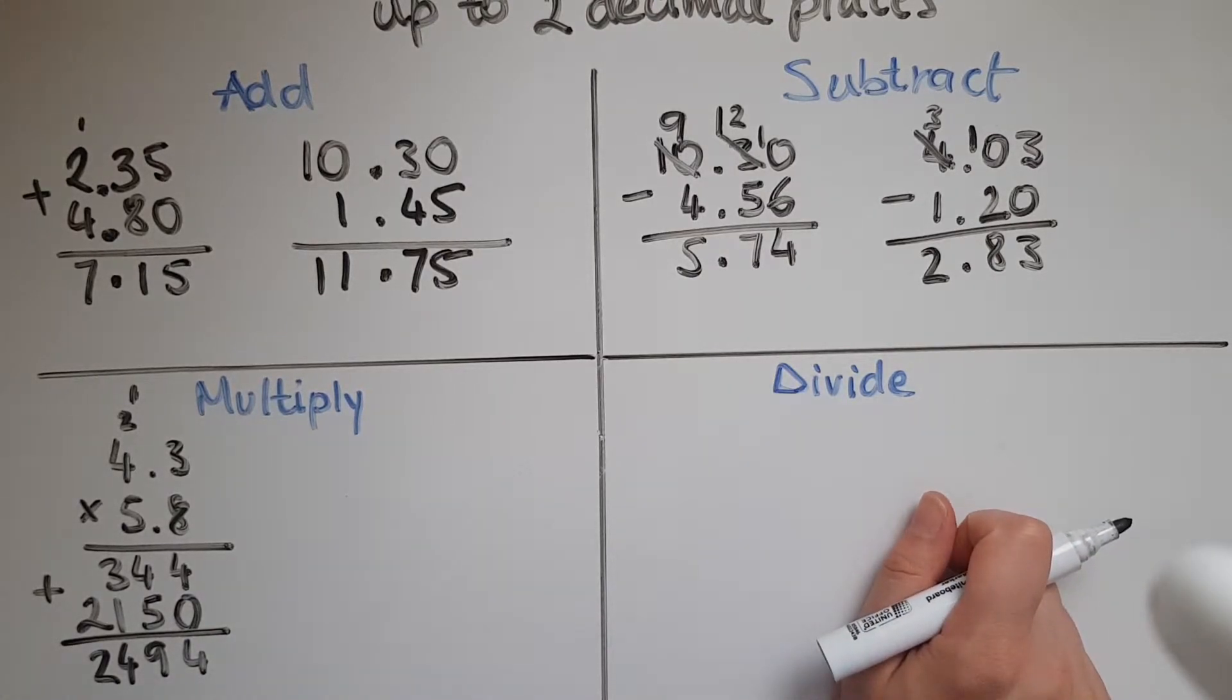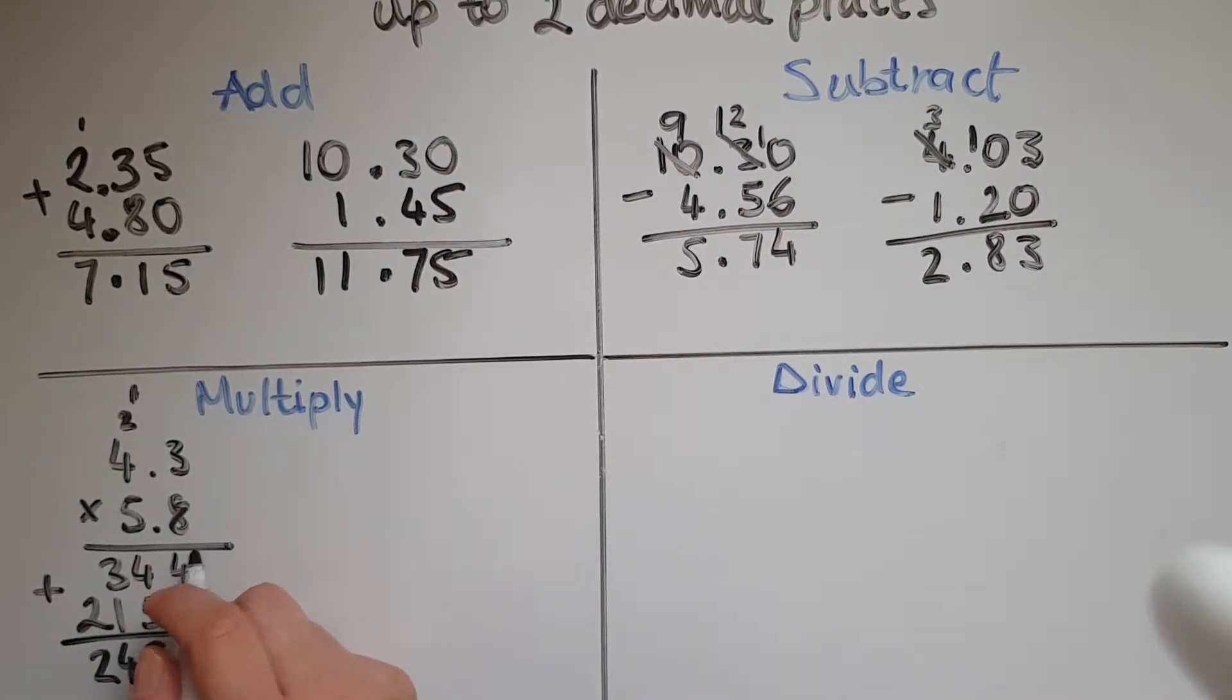Now the final thing before moving on, it would be checking how many decimal places do the two numbers that we multiplied have. So the first one 4.3 has one decimal place meaning one digit after the decimal point. And the second number also has one decimal place. So I'm going to add them up. One decimal point there and another one here makes two. So I'm going to give this number two decimal places. So we go 1, 2 and the decimal point goes right there. 24.94.